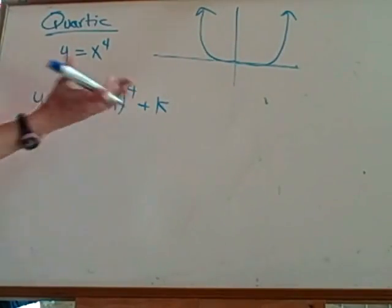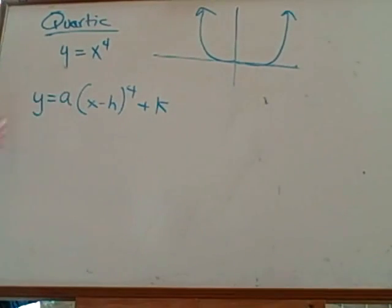The h will shift your graph left and right. The k will make it up and down. The a affects whether it's skinny or wide, opens up or down.